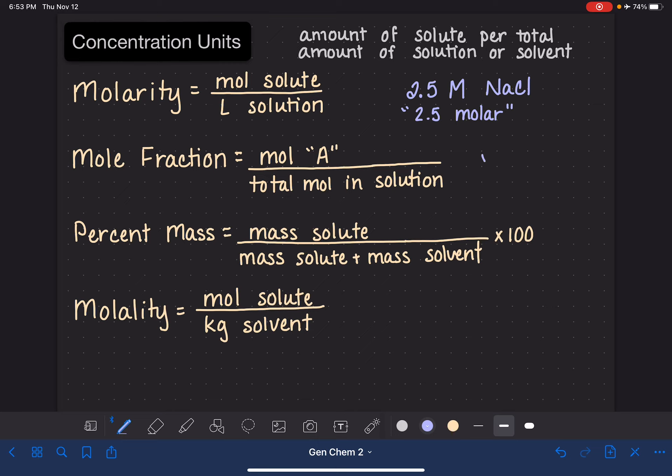For mole fraction, the symbol is a capital X, and then we put a subscript—the formula of the molecule we're calculating the mole fraction for. Since I said this is for moles of A, I'll be consistent and put A down there. Mole fraction is just a unitless number; maybe it's 0.5, it could be anything, because this is moles divided by moles. There's no unit here. When we express this, we just say something like the mole fraction is 0.5.